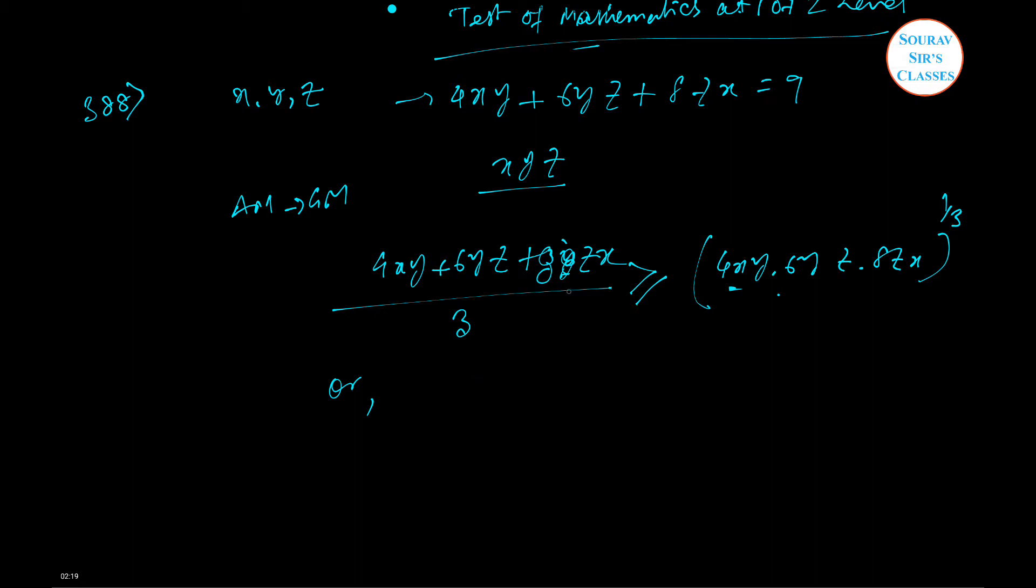Here we can see that LHS is 9, so dividing by 3 gives 3. The LHS is 3 is greater than or equal to the cube root of 4 into 6 into 8 into X squared Y squared Z squared. Now if we just change the side, this becomes 3 greater than or equal to 4 times 3 to the power 1/3 times XYZ to the power 2/3.